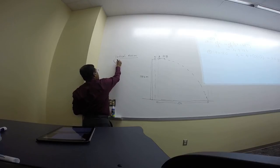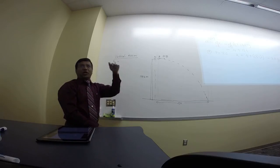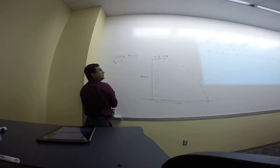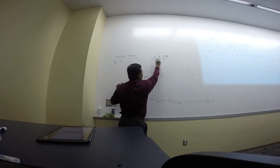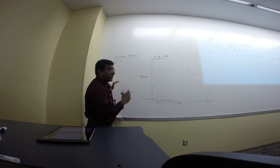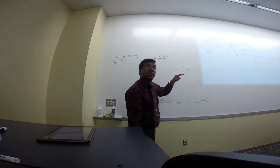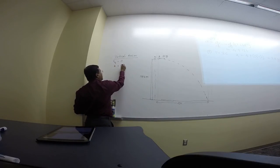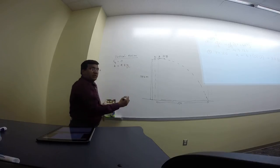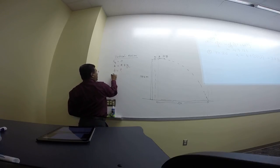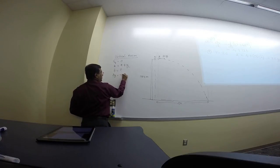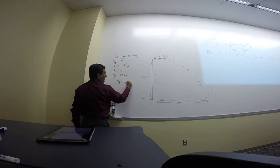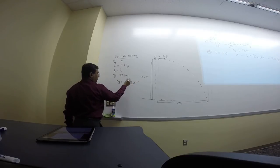For both A and B, the initial vertical velocity v₀y = 0. The 20 m/s for B is only horizontal. For both, acceleration = 9.8 m/s² downward, and vertical displacement = 78.4 m. Using s = v₀t + ½at²: 78.4 = 0 + ½(9.8)t² = 4.9t². So t² = 16, giving t = 4 seconds. Both hit the ground in 4 seconds.